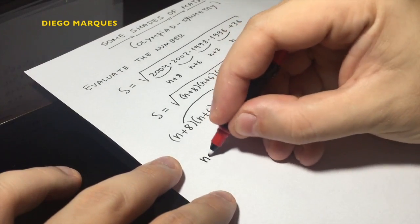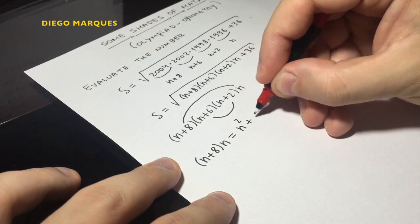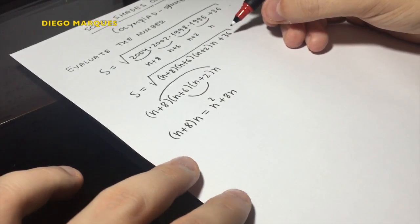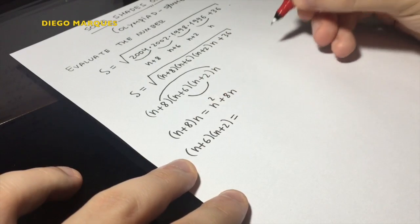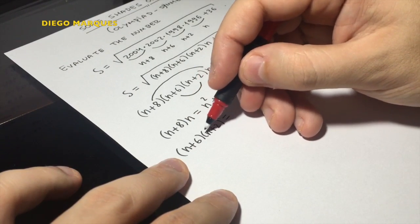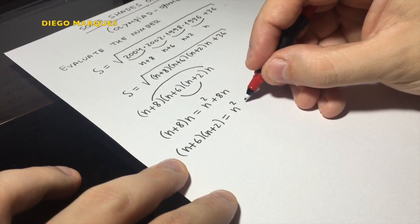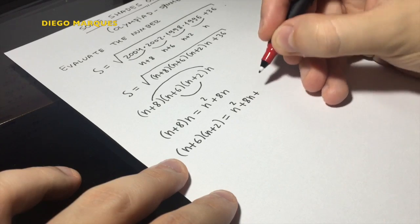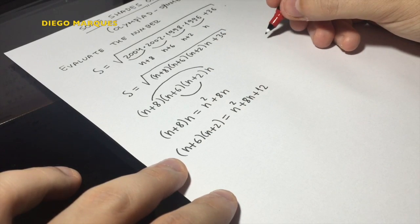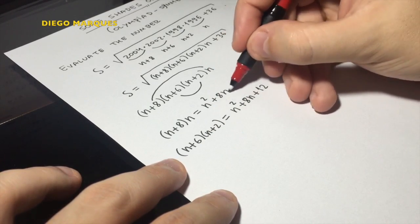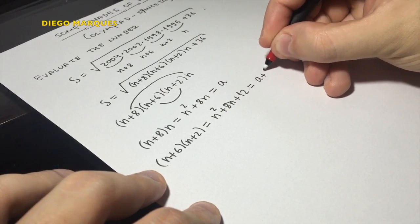Let's see what happens. So n plus 8 times n is equal to n square plus 8n. n plus 6 times n plus 2, doing some calculations, we have n square plus 6n plus 2n plus 2. So this is n square plus 8n plus 12. We have the same guy here. So I'll call this a, and so here I have a plus 12.